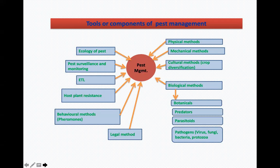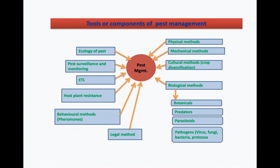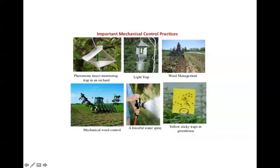Coming to the tools or components of pest management: the basic components are physical method, mechanical method, cultural method, and biological method. Biological method includes botanical, predator, parasitoid, and pathogen — pathogens mainly include virus, fungi, bacteria, and protozoa, which are used to kill the insect. Other factors in pest management include pest ecology, pest surveillance and monitoring, economic threshold level, host plant resistance, behavioral method, and legal method. Legal method is mostly important in the case of invasive insects.